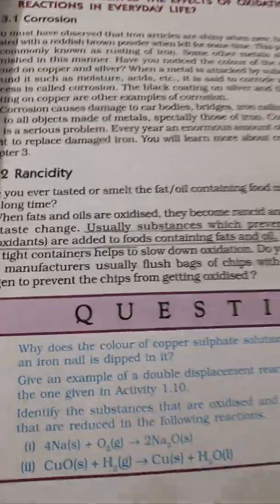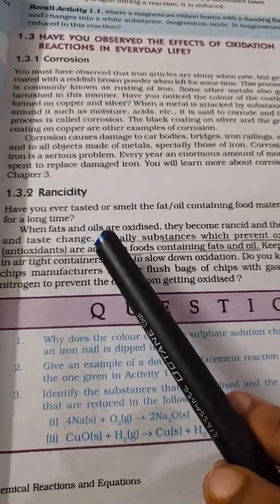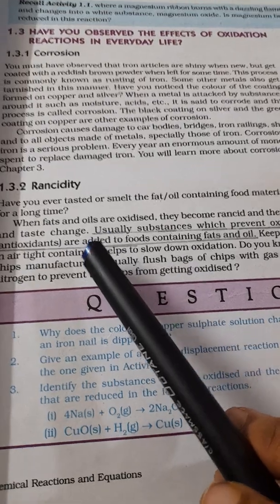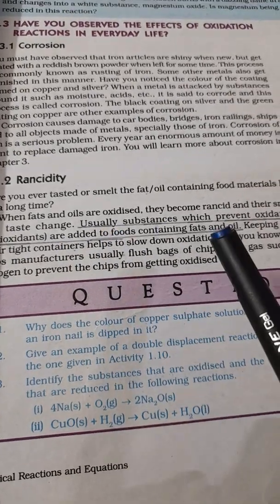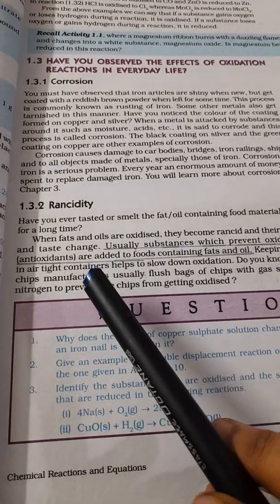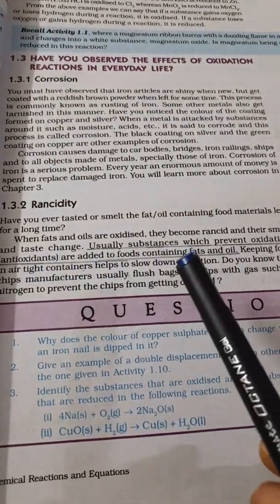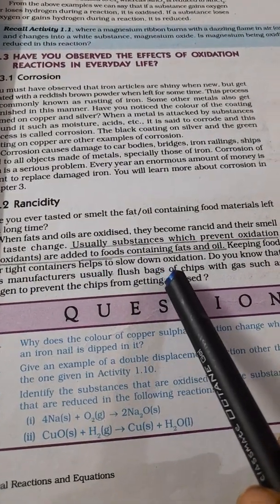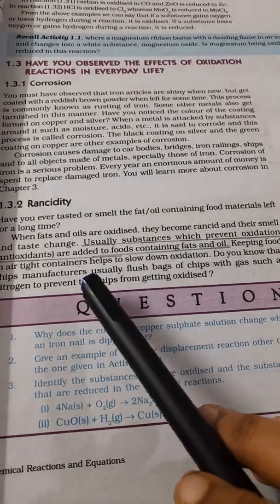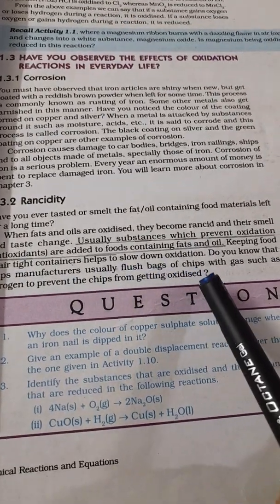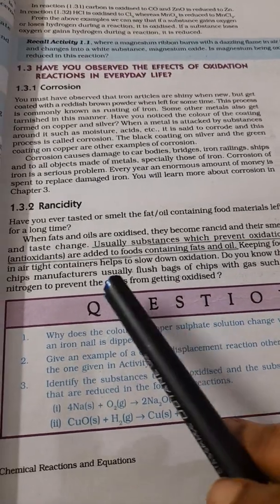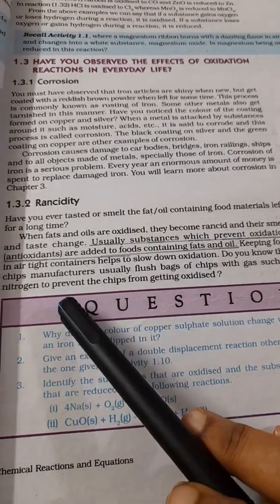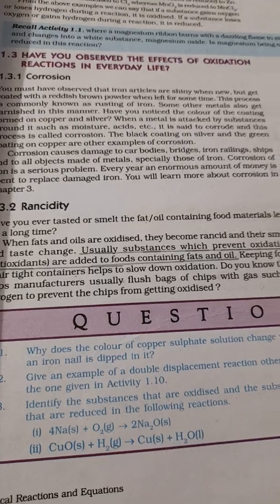Finally we will end this lesson by learning what is meant by rancidity. Have a smell or taste fat-containing food material left for a long time. What happens is that when fats and oils are oxidized they become rancid and their smell and taste change. Usually substances which prevent oxidation, that is antioxidants, are added to food containing fats and oil. Keeping food in airtight containers helps to slow down oxidation. Normally manufacturers use flush bags of chips with gas such as nitrogen to prevent the chips getting oxidized.